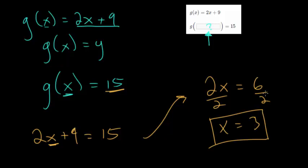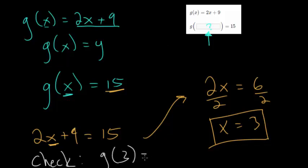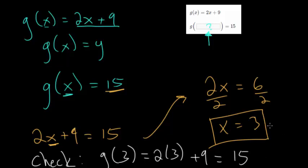We can check our work now. We think that plugging in 3 gives back a y value of 15. So we evaluate g(3): 2 times 3 plus 9 gives 6 plus 9, which is 15. Since we get back the answer we expected, we can feel very confident that x equals 3. In other words, when you plug in 3 to function g, it does return a y value of 15.